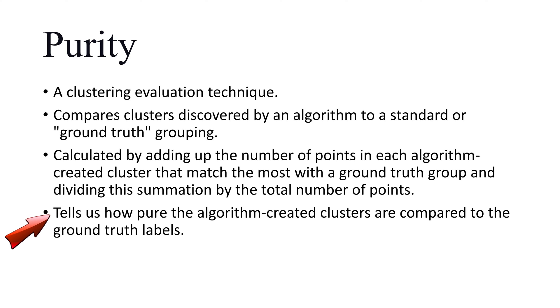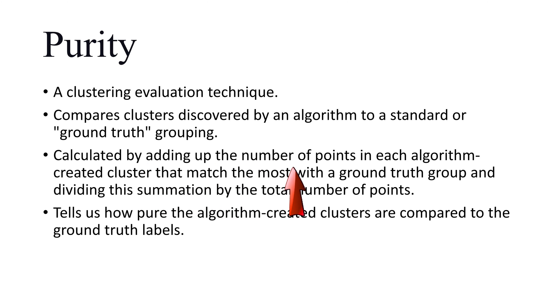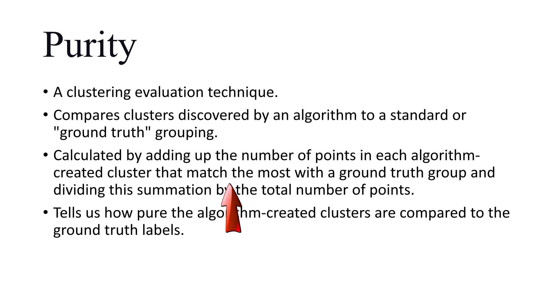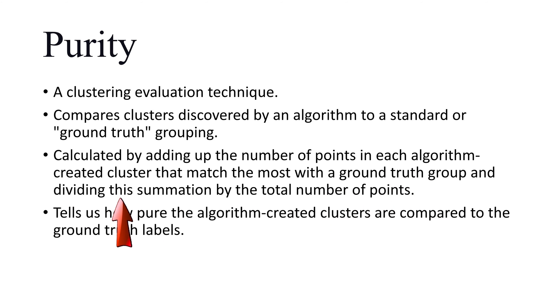Purity is calculated by adding up the number of points in each algorithm-created cluster that match the most with a ground truth cluster, and dividing this summation by the total number of points.